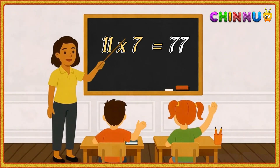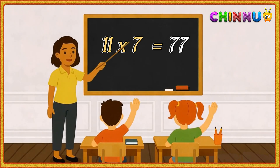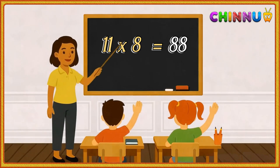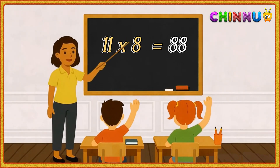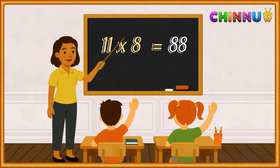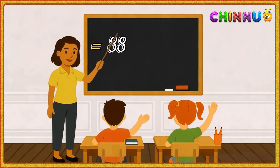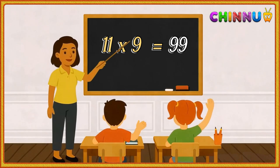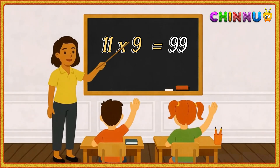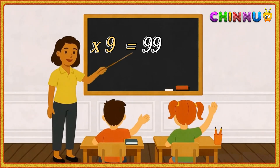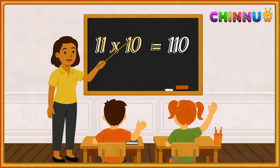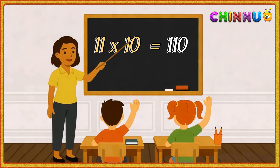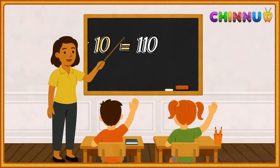11 sixes are 66. 11 sevens are 77. 11 eights are 88. 11 nines are 99. 11 tens are 110.